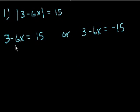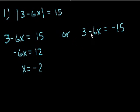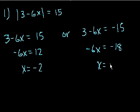So let's solve for x. Subtract 3 from both sides, you get minus 6x is equal to 12. Divide both sides by minus 6, you get x is equal to minus 2. And here, if we subtract 3 from both sides, you get minus 6x is equal to minus 18. Divide both sides by minus 6, you get x is equal to positive 3. So x could be minus 2 or 3, and that's choice B.